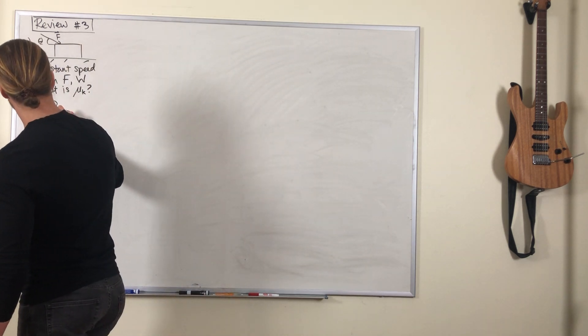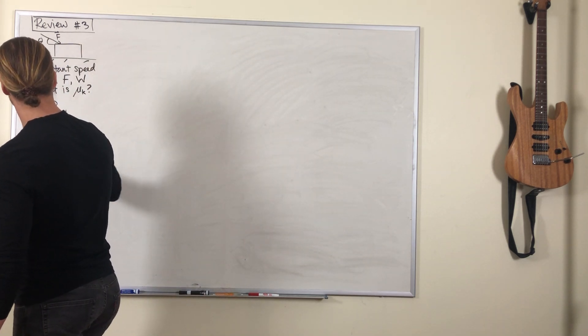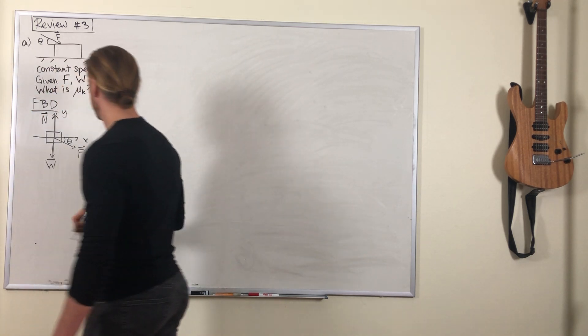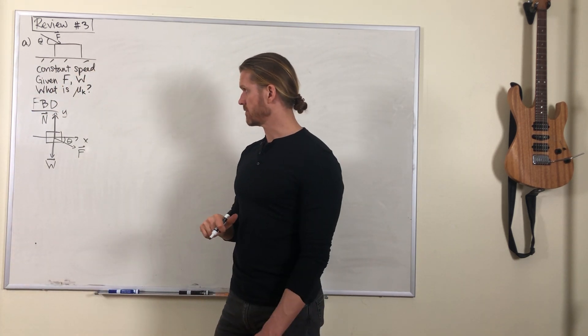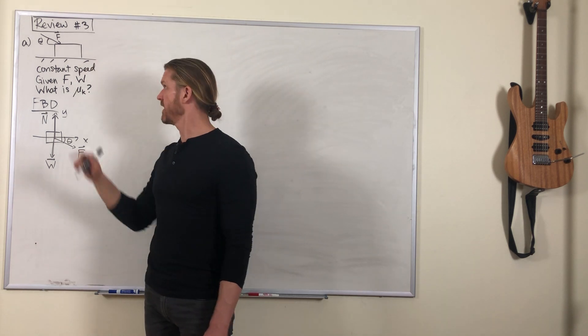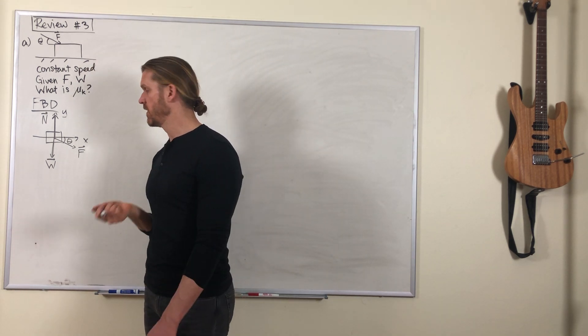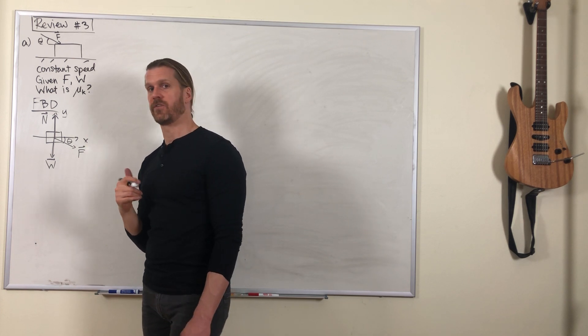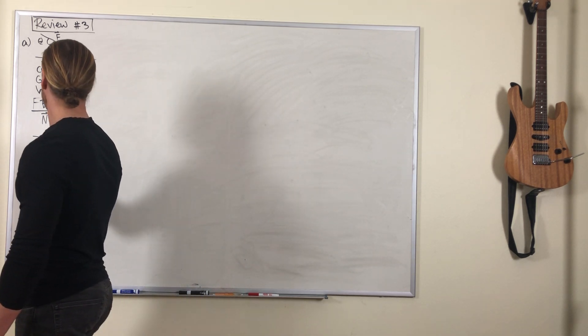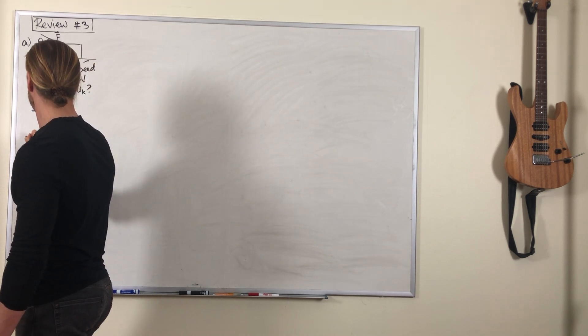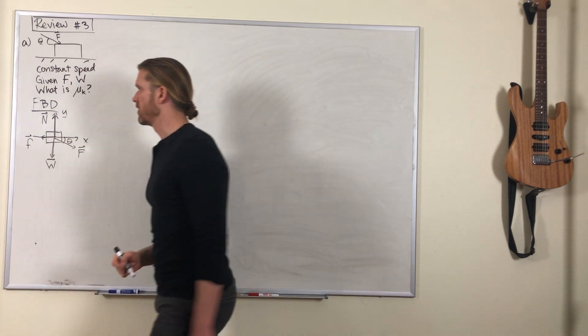And we've got a normal force to keep this thing from falling through the floor. And lastly, this is not accelerating, it's moving at a constant speed. There's friction in the problem. That friction force opposes the direction of motion, so the friction force is over here pointing to the left.